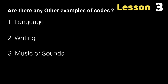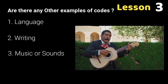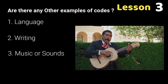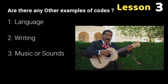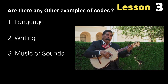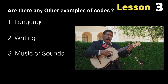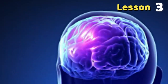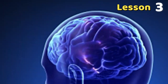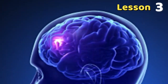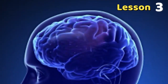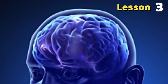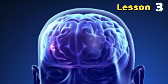3. Music or sounds — different sound tones produced from humans, musical instruments, etc., can be used in communication. When sense organs receive this information and send messages to the brain, the brain decodes and interprets the meaning.